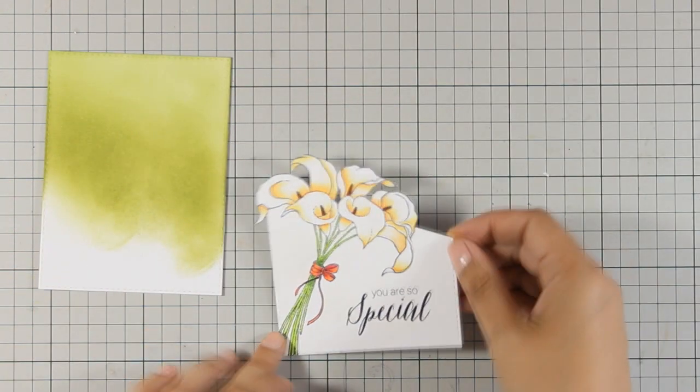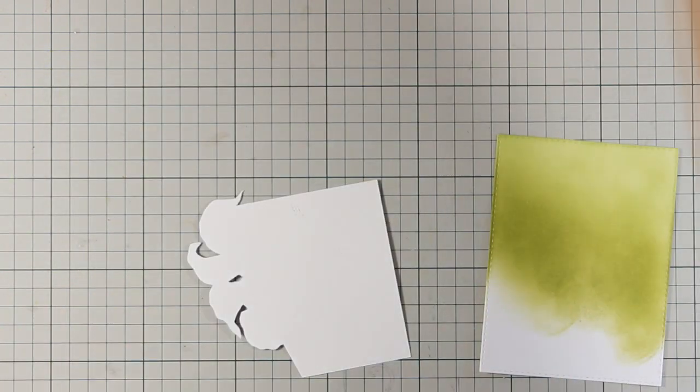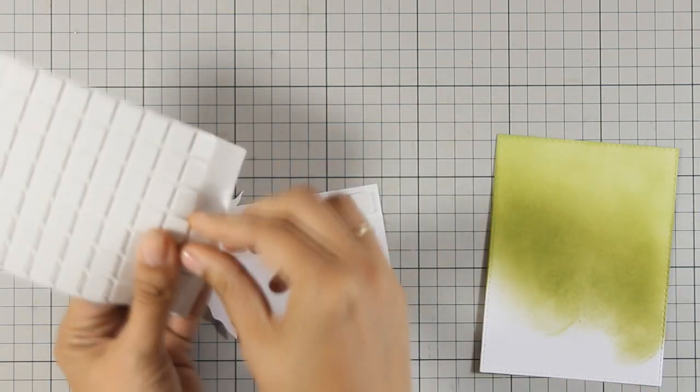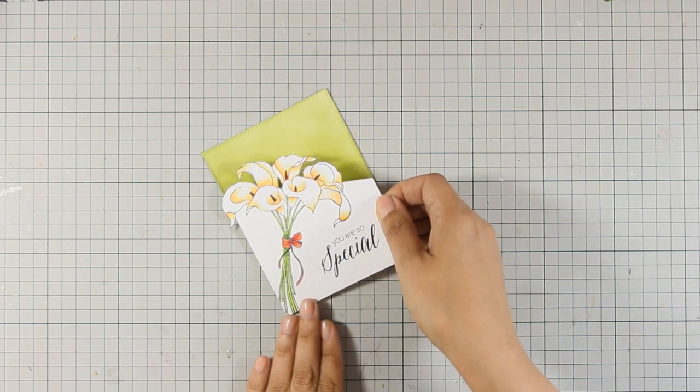So my main panel is ready now. I am going to use some foam squares at the back and stick it on top of my panel. And while I am doing that, just to let you know that as always you can find a full list of all the supplies that I am using just below the video as well as on my blog.